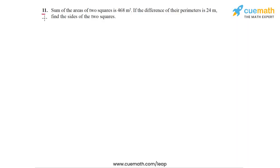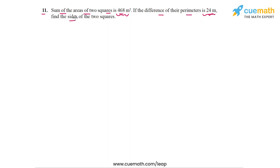In question 11 of this exercise, the problem statement says: the sum of the areas of two squares is 468 square meters. If the difference of the perimeters is 24 meters, find the sides of the two squares. So we're given the sum of the areas and the difference of the perimeters, and from these two data points we have to find the sides of the two squares.